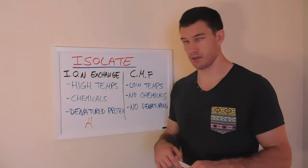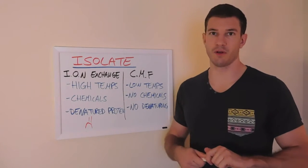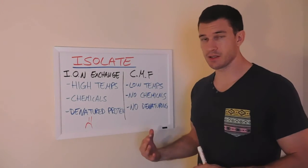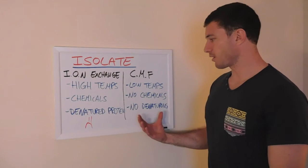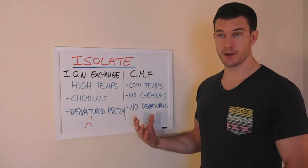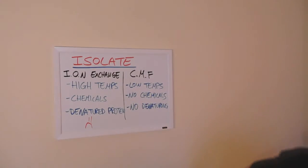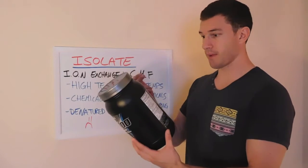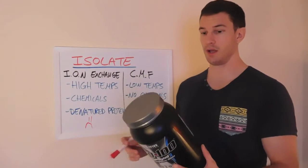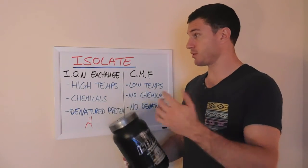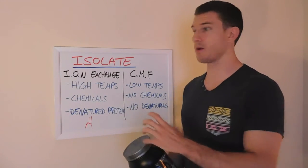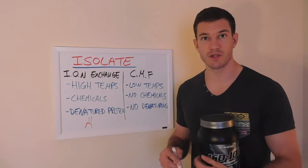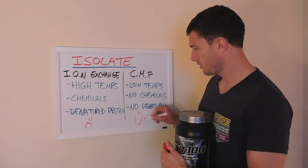The one that I would recommend to keep an eye on is cross flow microfiltration. This is done at low temperature. It doesn't add any chemicals and it doesn't denature the protein, which is what we want. A lot of products, if they do use this method, they'll label it on their product. For example, this whey isolate is Dymatize ISO 100. It says on the back that they use cross flow microfiltration. If it doesn't say anything, I would just assume it goes through ion exchange because companies don't necessarily want to brag about them using ion exchange, but they do about cross flow microfiltration. So happy face.